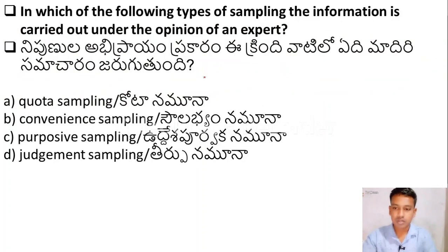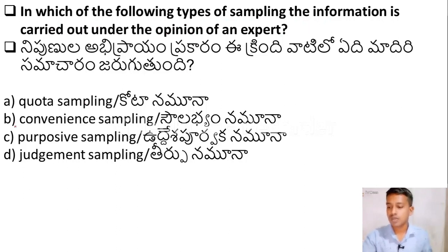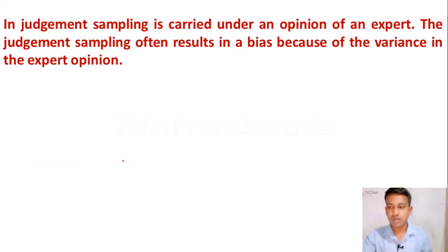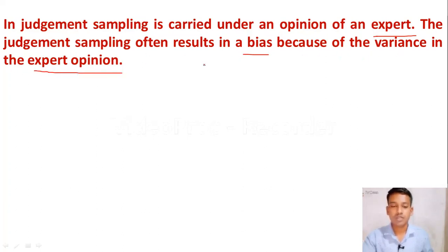The next question: in which of the following types of sampling is information carried out under the opinion of an expert? Option A: Quota sampling, Option B: Convenience sampling, Option C: Purposive sampling, Option D: Judgment sampling. The right answer is Option D — Judgment sampling — because we are using the judgment given by the expert. Judgment sampling is carried out under the opinion of an expert. Please remember that judgment sampling often results in bias because of the variance in expert opinion.